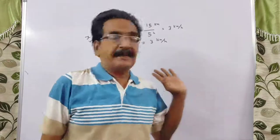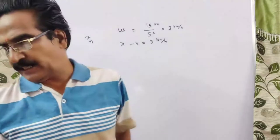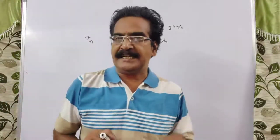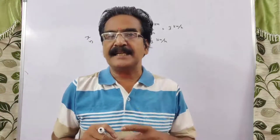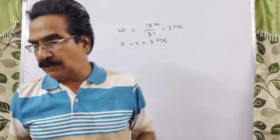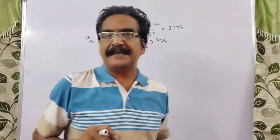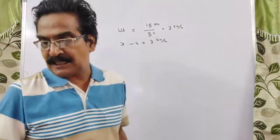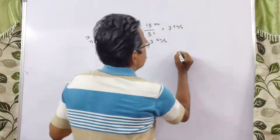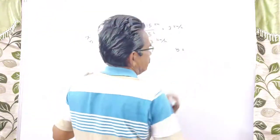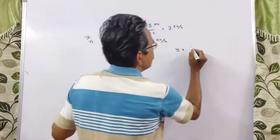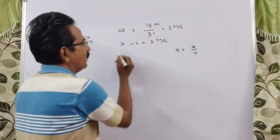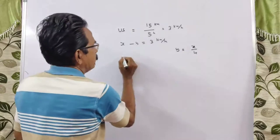So X minus Y is equal to 3 kmph. Now the next condition: the speed of the current Y is one-fourth of the speed of the boat in still water. So Y is equal to X by 4.